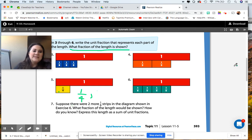And then finally, for number seven, it says suppose there were two more one-sixth strips in the diagram shown in exercise six. So we have to look at this one. What fraction of the length would be shown? How do you know, express this length as a sum of unit fractions? Well, we know that this is divided into sixths, and it's saying that we need to add two more.